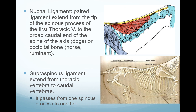Next, I want to talk about two ligaments found in the neck region in the area of the epaxial muscles. We have the nuchal ligament, which is a paired ligament. In dogs, it extends from the tip of the spinous process of the first thoracic vertebra to the broad caudal end of the spine of the axis. In horses and ruminants, it extends from the spine process of the thoracic vertebra and ends at the caudal portion of the occipital bone.